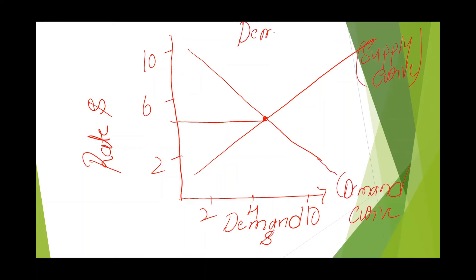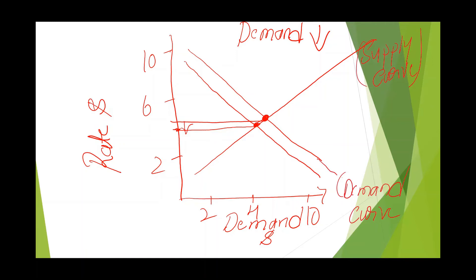Now if demand decreases, the new demand curve will come below the original demand curve. The new equilibrium point corresponds to a lower price — that means a decrease in price. As per the law of demand, whenever the price decreases, the quantity demanded increases. So the quantity will move back up to the original equilibrium point, and the equilibrium status will be achieved again when there is a decrease in demand.